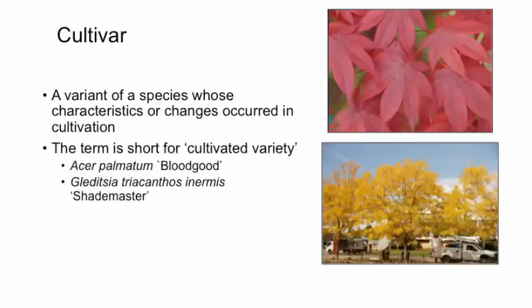A cultivar is a variant of a plant species where the variation was influenced by man while the plant was in cultivation. The term cultivar is short for cultivated variety. The Bloodgood Japanese maple, pictured at top, is a good example, as is the Shademaster thornless honey locust, pictured below.